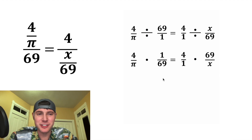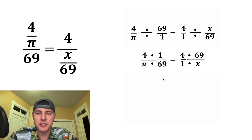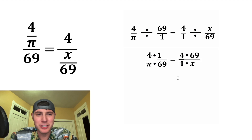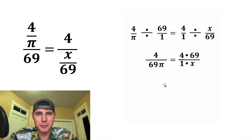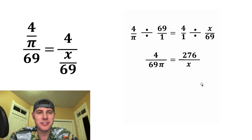Now multiplying fractions is a lot easier — you just multiply across on top and on bottom. We can clean things up: four times one is equal to four, and pi times 69 is 69 pi. Four times 69 is equal to 276, and one times x is just x.